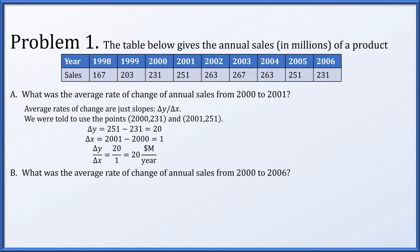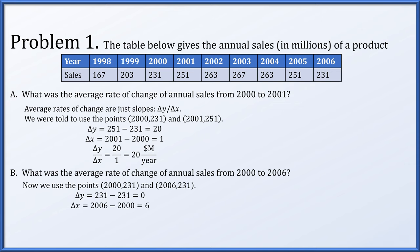For part b, what's the average rate of change from 2000 to 2006? One of our points is the same, but the other changes to 2006, with y value 231. We compute delta y to be 0 and delta x to be 6. The ratio 0 over 6 is 0 million dollars per year.